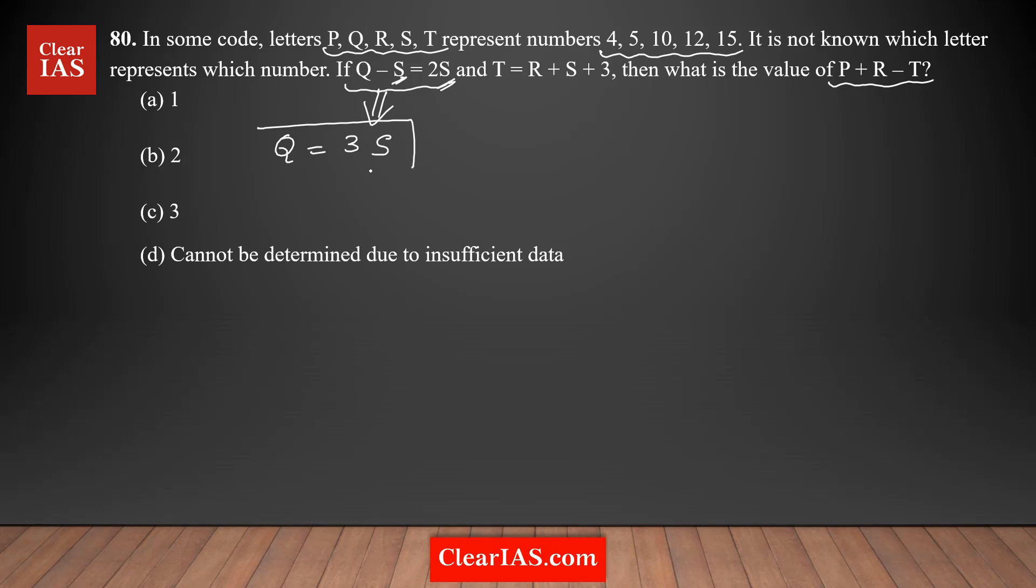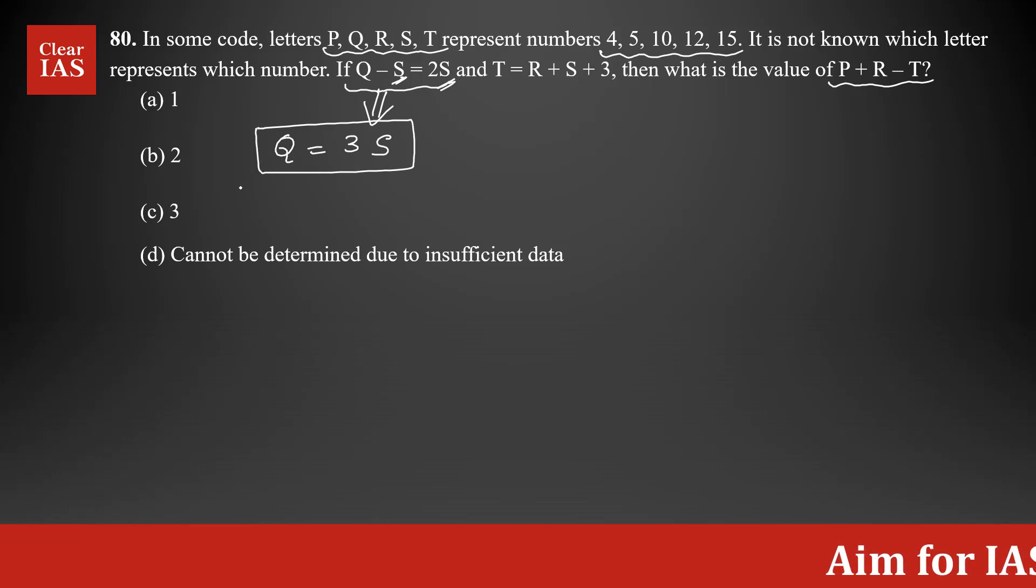If you closely analyze this relationship, Q, which is one of the numbers, is 3 times S, another number. So what we need to do here is look for a pair of numbers where one is 3 times the other. We look at the numbers here. I could see 12 and 4 is one such pair. 12 is 3 times 4.